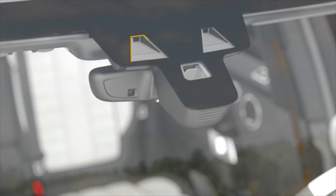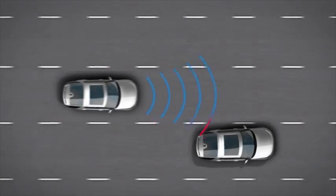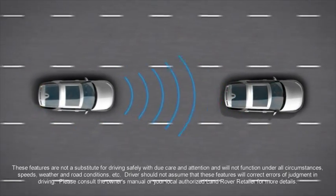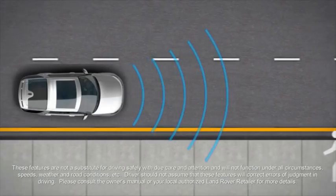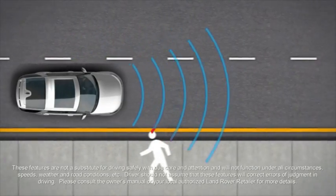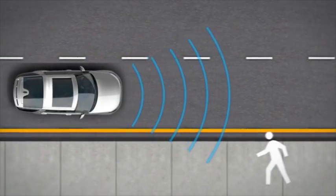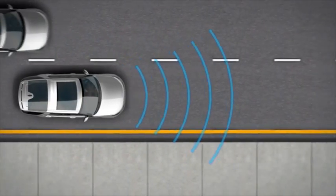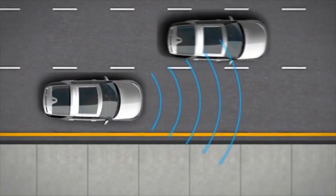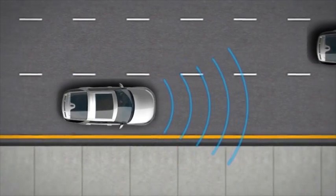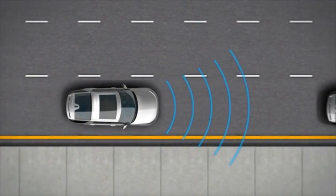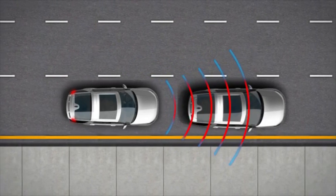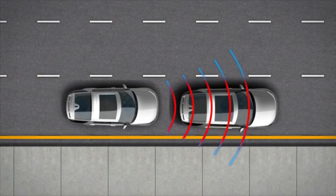Autonomous emergency braking, AEB, uses forward-looking cameras located above the rear-view mirror to help identify an imminent risk of collision with another vehicle travelling in front. AEB also helps to identify an imminent risk of collision with a crossing pedestrian. In most instances, AEB is designed to help reduce the severity of an impact. In some cases, the system helps stop the vehicle before an impact takes place.